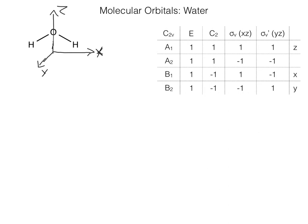Now that we have the coordinate axes chosen, we need to treat both of the hydrogens together and the oxygen separately, and then we'll combine them into water molecular orbitals. Let's start with the hydrogen atoms first to determine all of the symmetry groups that each one of these atomic orbitals represents, so we can see how they match up as molecular orbitals. We need to go through each of the symmetry operations: the identity operation, the C2 rotation, and the two reflections.